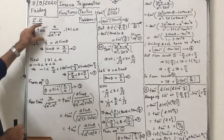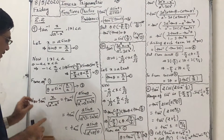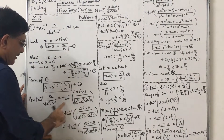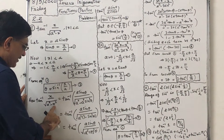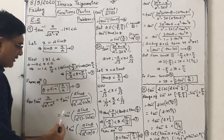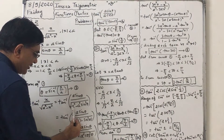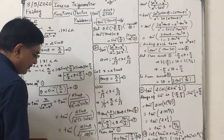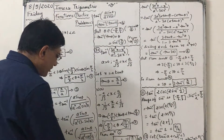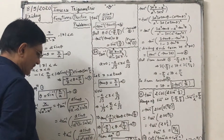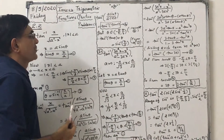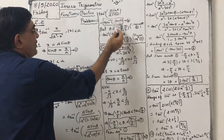Now tan⁻¹(x / √(a² − x²)). Putting in the value of x as a sin θ: we get a sin θ upon √(a² − a² sin²θ). Taking a² as common, it becomes √(1 − sin²θ) = cos θ, so the denominator is a cos θ. So a sin θ upon a cos θ — a cancels — and tan⁻¹(sin/cos) = tan⁻¹(tan θ).